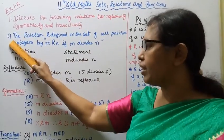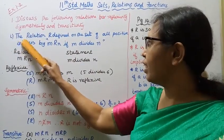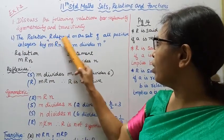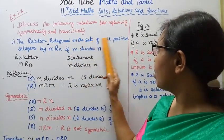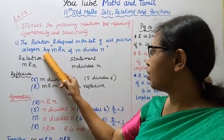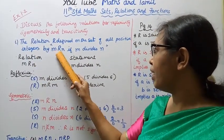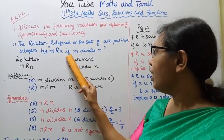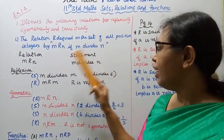As the first subdivision, the relation R is defined on the set of all positive integers by: M is related to N if M divides N.